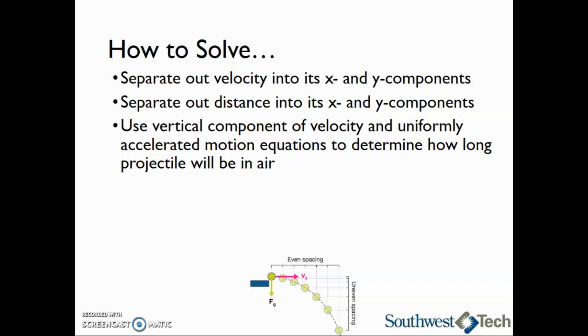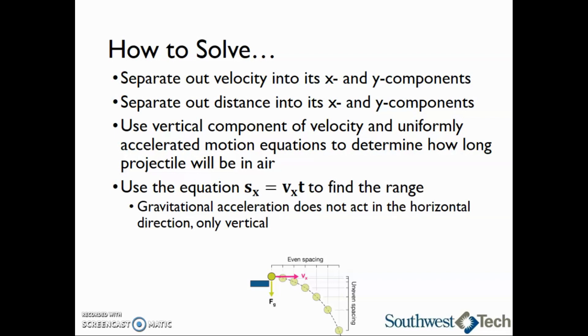Once we have the time, we will substitute that into the equation s sub x equals v sub x times t to find the range or the x component. We will use this abbreviated equation because gravitational acceleration does not act in the horizontal direction. It only acts in the vertical direction.